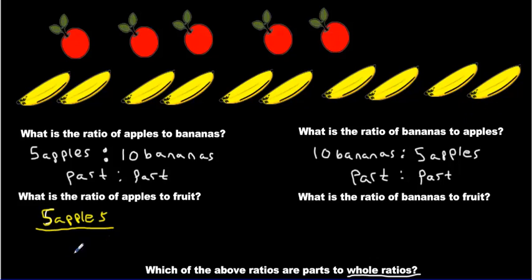So we have 15, 15 fruit. Whereas this one, what is the ratio of bananas to fruit? How many bananas do we have? We've got 10 bananas. How many fruits do we have? 15 fruits.